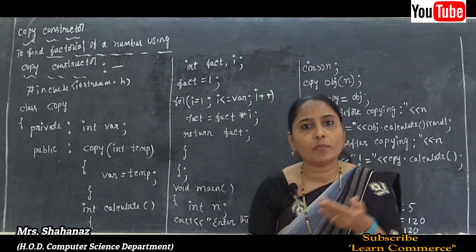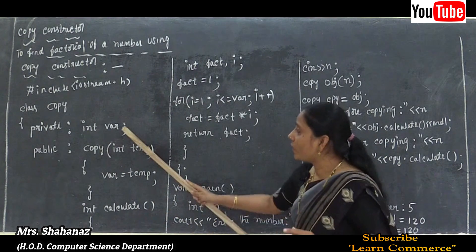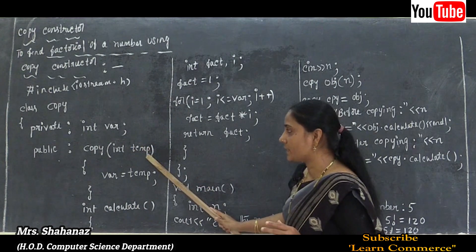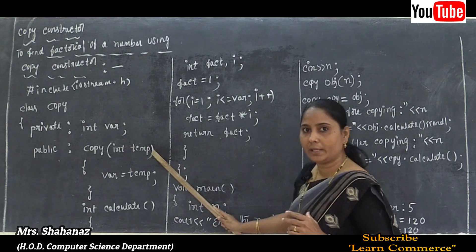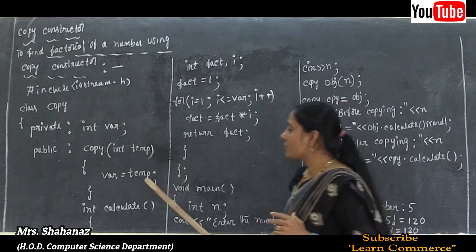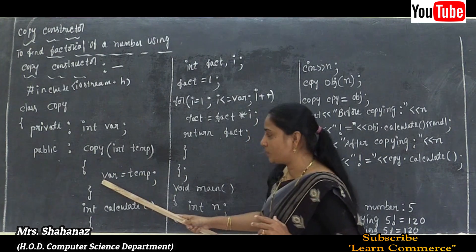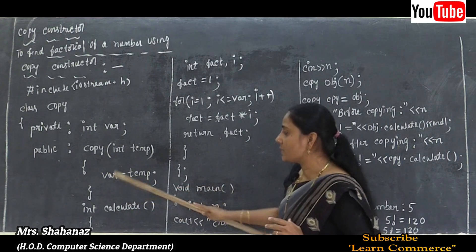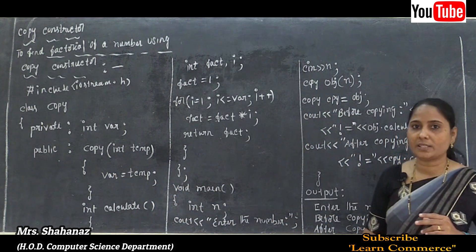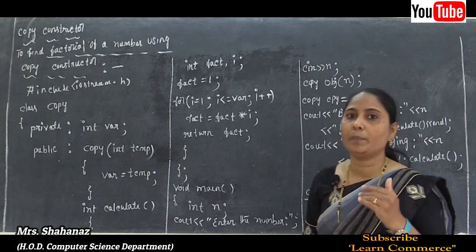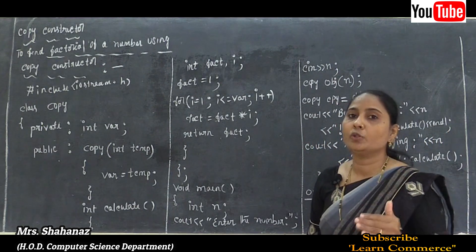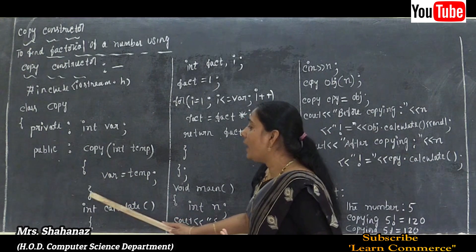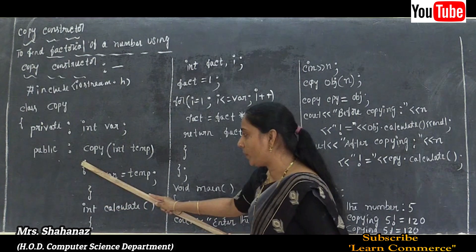The meaning of the copy constructor is to copy from one object to another. We already have one member data 'var', and inside the copy constructor we use another variable 'tmp'. The assignment var = tmp makes a copy from tmp into var. That is the core meaning of the copy constructor — copying from one object to another.